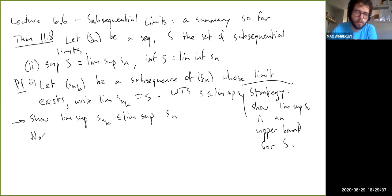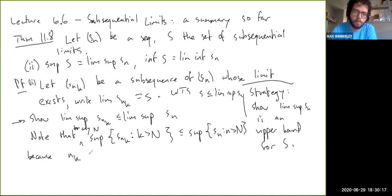where we note that nk is greater than or equal to k for every k. So basically, if you consider, so note that the sup of Snk for k greater than n for any capital N or any n, this sup is less than or equal to a different one, supremum of Sn for n greater than n. Because nk is greater than or equal to k for all k. So because nk is greater than or equal to k, all of these elements are actually in this set as well.